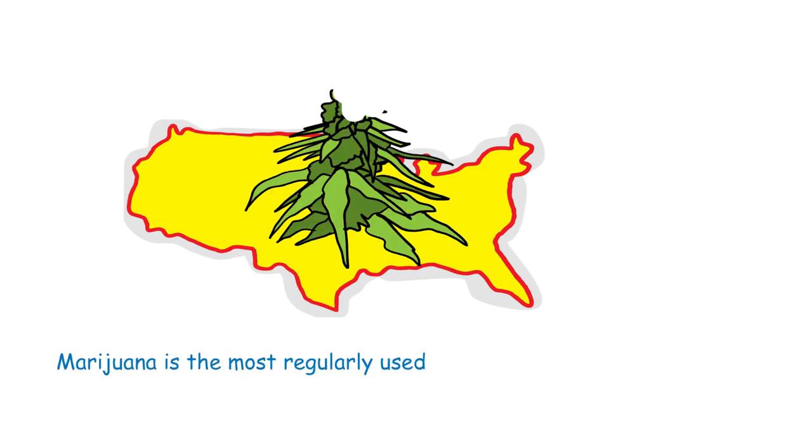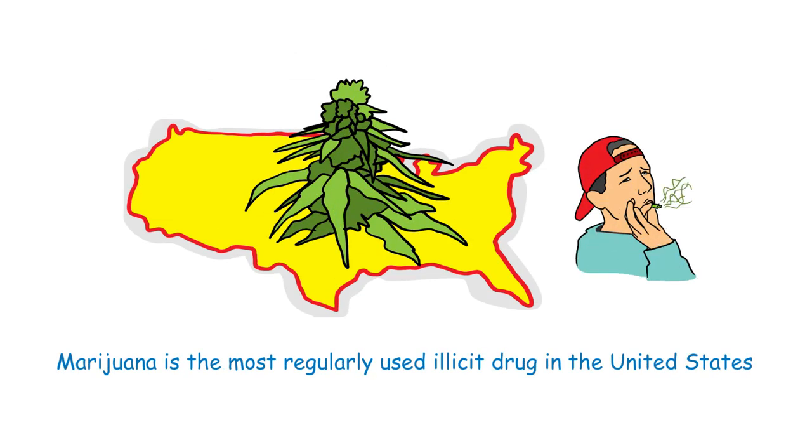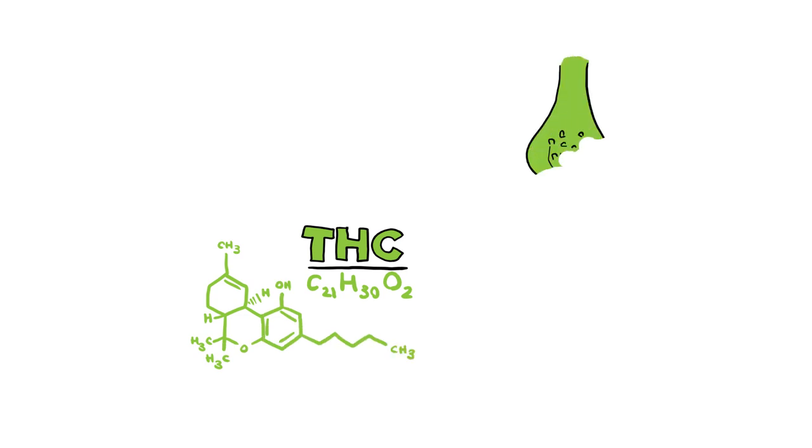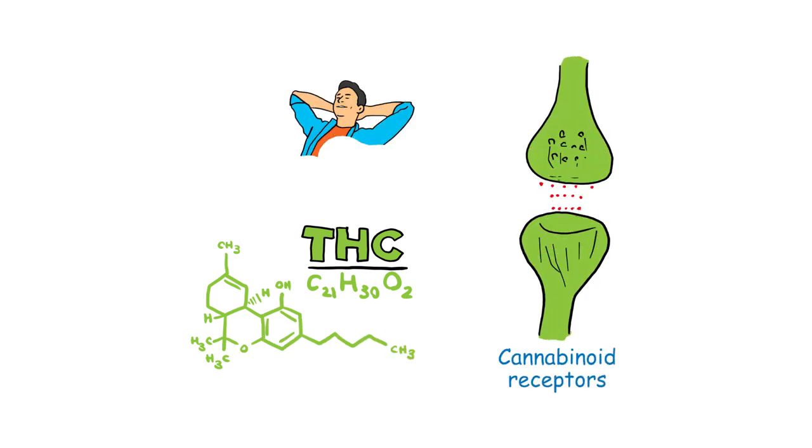Marijuana is the most regularly used illicit drug in the United States, and its use is especially common among adolescents and young adults. The psychoactive chemical in marijuana, delta-9-tetrahydrocannabinol, interacts and binds with cannabinoid receptors in the brain, producing a mellowing and relaxing effect. Regions of the brain with high concentrations of cannabinoid receptors are heavily impacted.